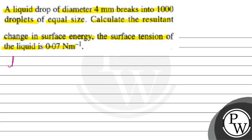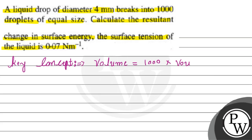Let's start the solution. But before that, let's talk about the key concept we are going to use here. Basically, when the bigger drop breaks into 1000 droplets, the volume of the bigger drop does not change — it will be equal to 1000 times the volume of the small droplets. Since liquid drops are in spherical form, we will use the volume formula for a sphere: V = (4/3)πr³.